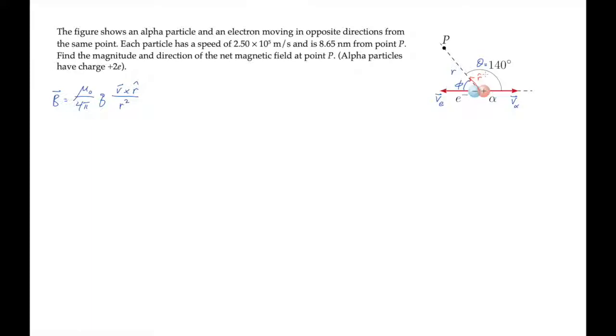Let's first work out the direction of the magnetic field produced by each of the particles. For the alpha particle, the vector v alpha cross r hat is directed out of the screen. Its positive charge q means the magnetic field it produces will also be in that direction.